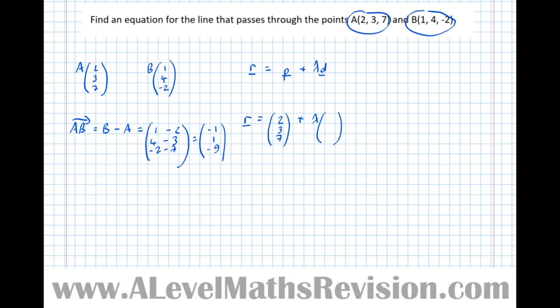So therefore, the answer, or an answer rather, because there's an infinite number of correct answers, is R equals (2,3,7) plus lambda (-1,1,-9). Now, an equally valid answer could be R equals, using a different point, (1,4,-2), plus lambda (-1,1,-9).